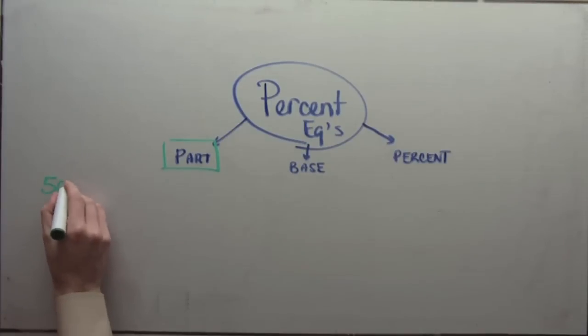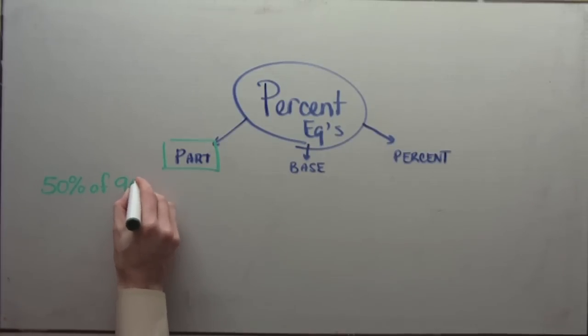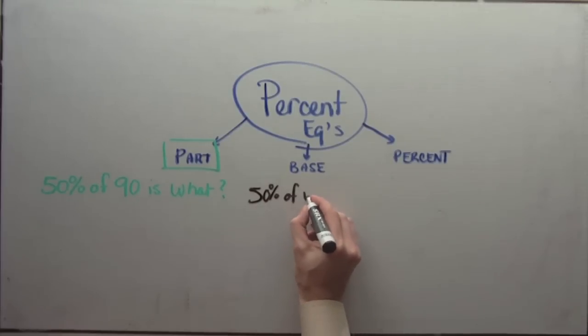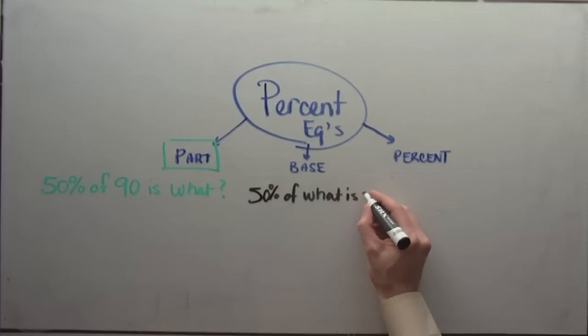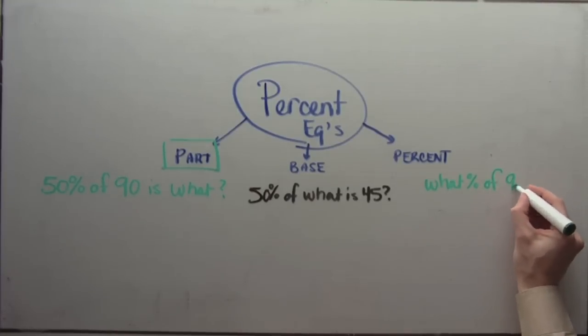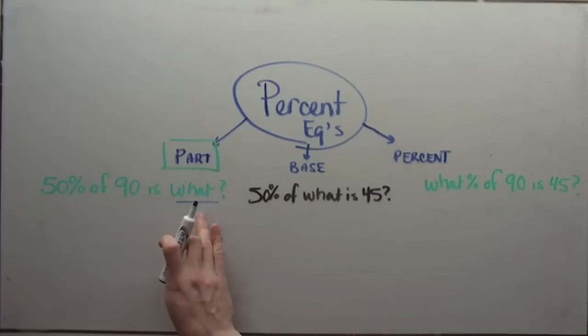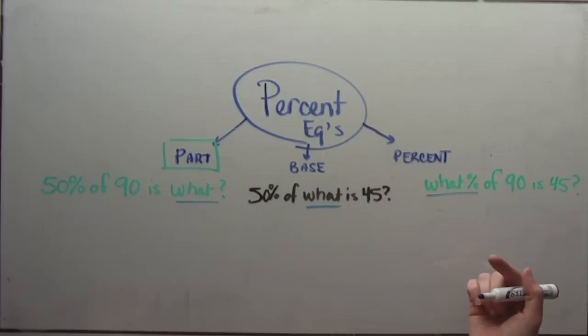For part equations, you'll see something like this: Fifty percent of 90 is what number? In the case of the base equation, you might see something like this alternatively: Fifty percent of what number is 45. And then for percents: what percent of 90 is 45? And all that has changed, again, is just the location of the question. What? What number? What number for a part equation is at the end, usually. What number is in the middle of the sentence for a base equation. And what percent is a dead giveaway, because they'll always have to put the percent or write the word percent, is at the beginning of literal percent equations.